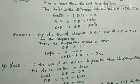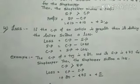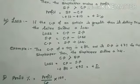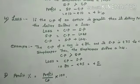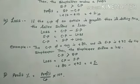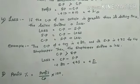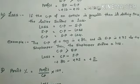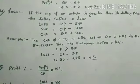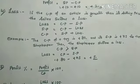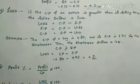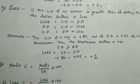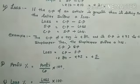Now, loss. If the cost price of an article is greater than the selling price, the seller suffers a loss. Loss = CP − SP. To find SP: SP = CP − Loss. To find CP: CP = SP + Loss. For example: the cost price of a toy is ₹80 and the selling price is ₹75. The shopkeeper suffers a loss. Loss = 80 − 75 = ₹5.